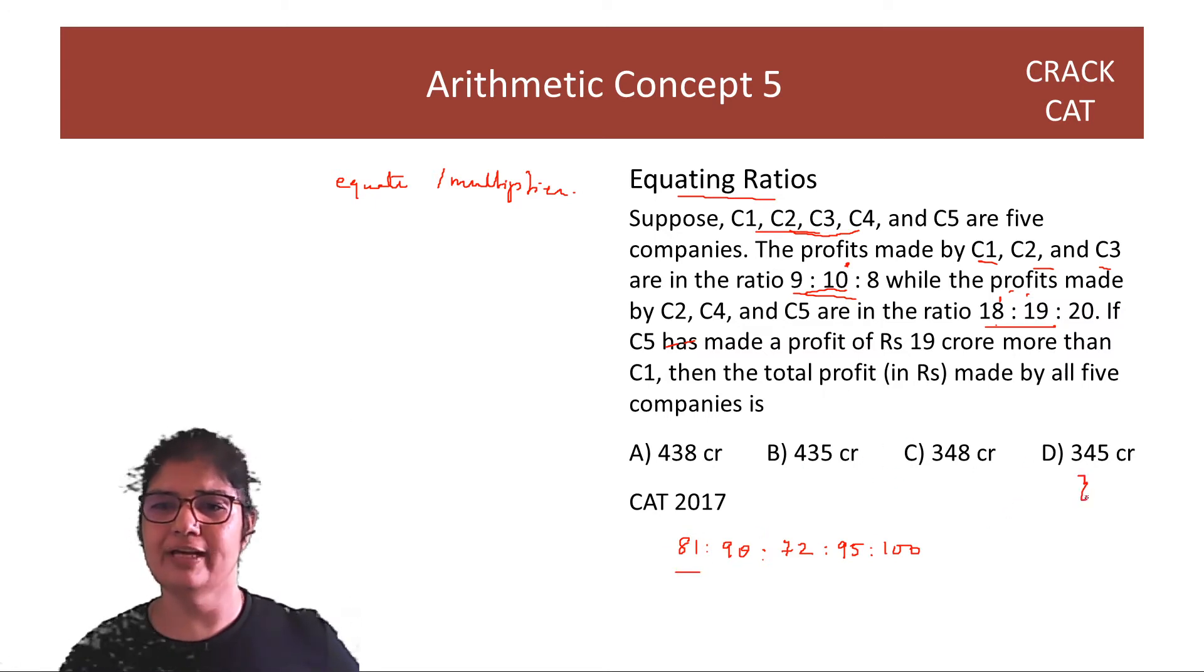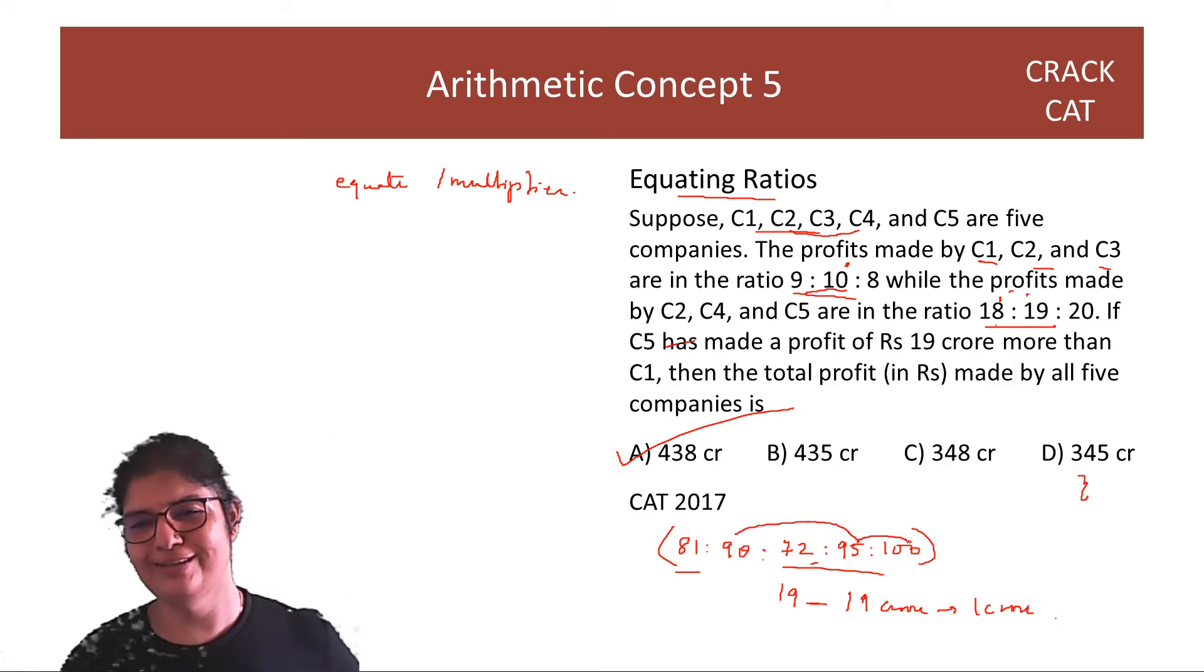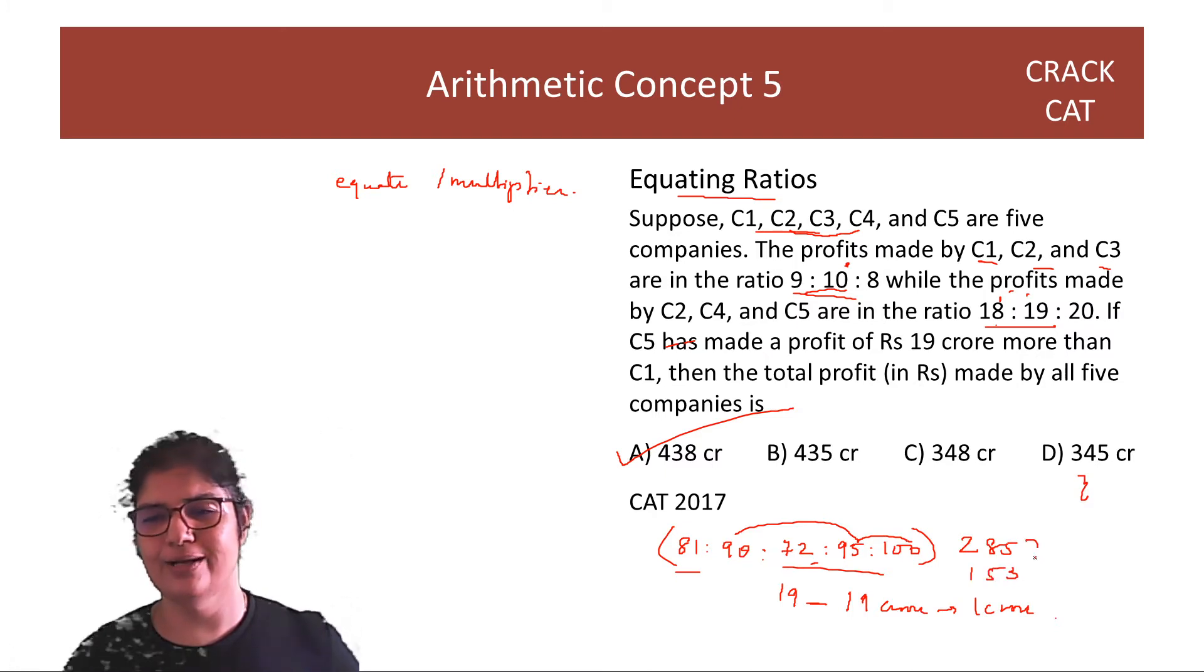C5 has made a profit of 19 crores more. Yaha pe C5 has made a profit of 19 more. So 19 corresponds to 19 crores. So multiplier is 1 crore. So all 5 ka humein sum karna hai. And then multiply it with 1 crore. So answer is going to be 438 crore. You add all of these up. You can start with these 3. This is 285. And then you are going to add 153 to that. So answer is going to be 438.